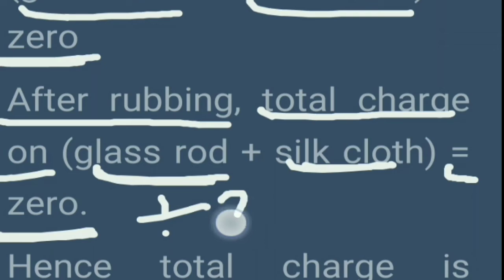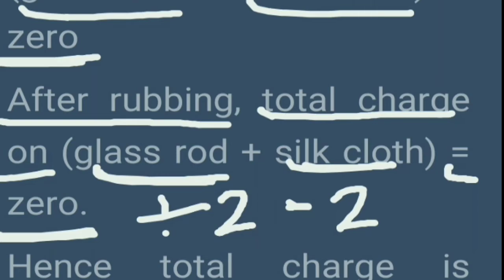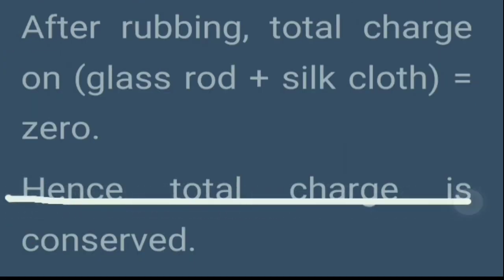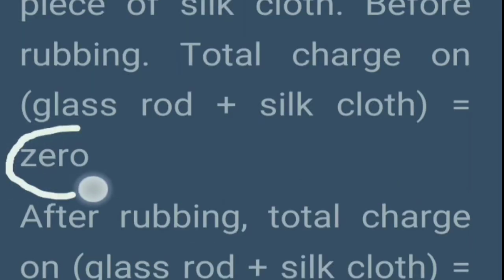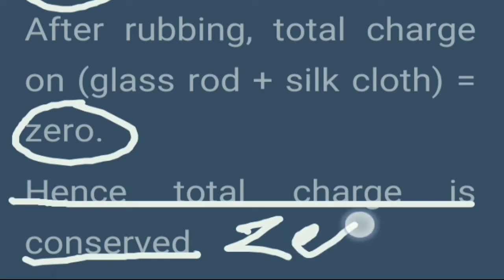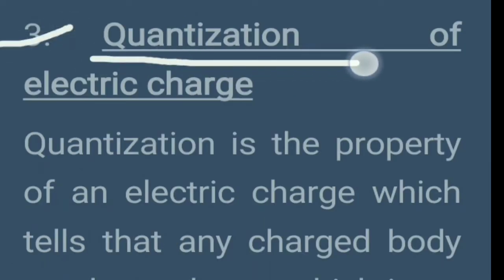Rub करने पे glass पे मान लो plus 2q charge आया और silk पे minus 2q charge आया। Charges additive in nature हैं, तो इनका total 0 हो जाएगा। Hence, total charge is conserved — rub करने से पहले भी 0 था और rub करने के बाद भी 0 है। So charge conserve हो गया।